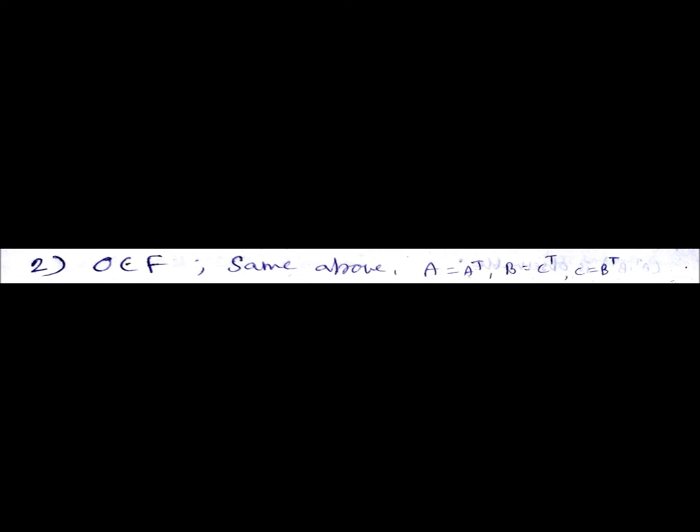You also know that you have observable canonical form and this can be done in a similar process. If you do that you will get A as A transpose, B as C transpose, and C as B transpose. This is important for getting ABC matrices in the observable canonical form.